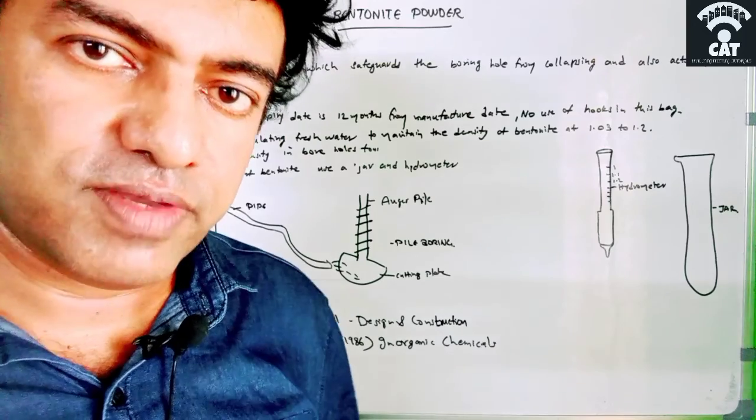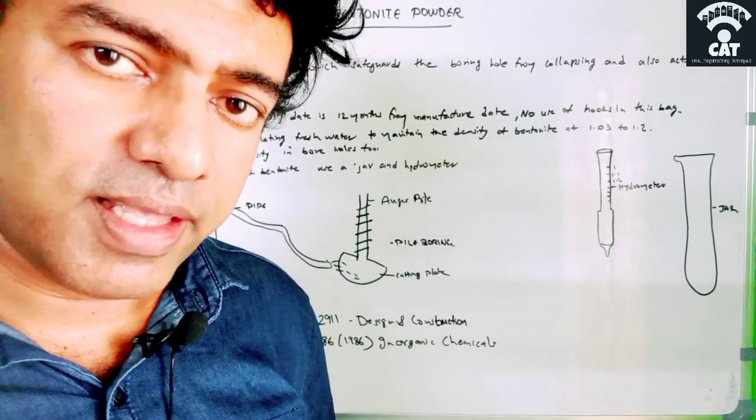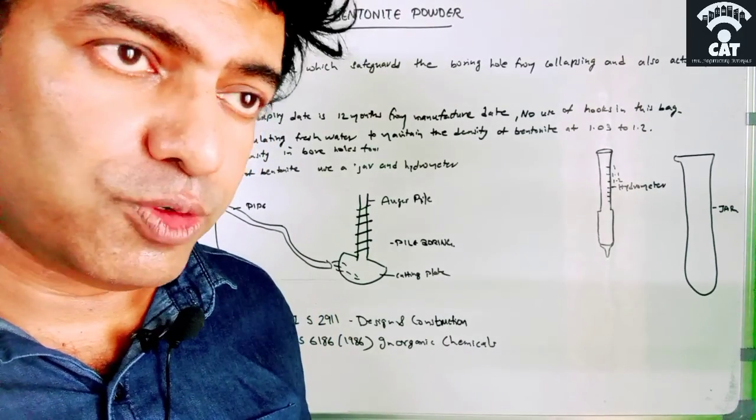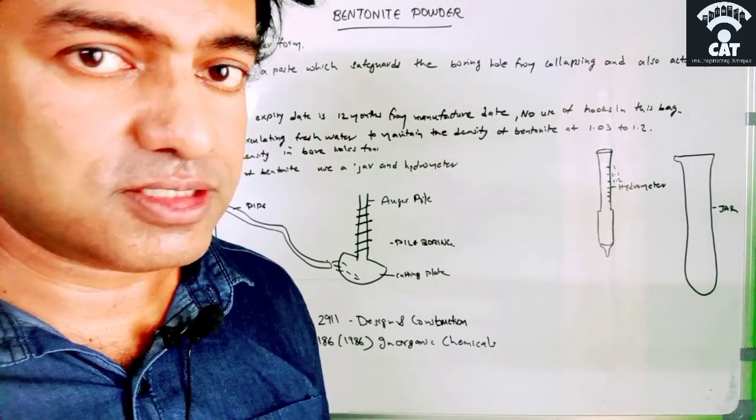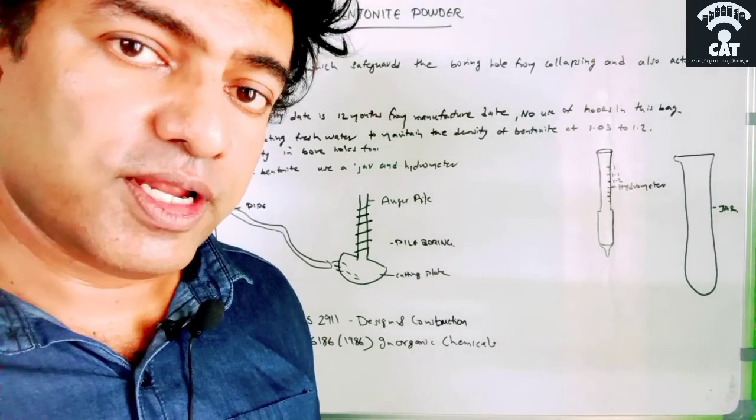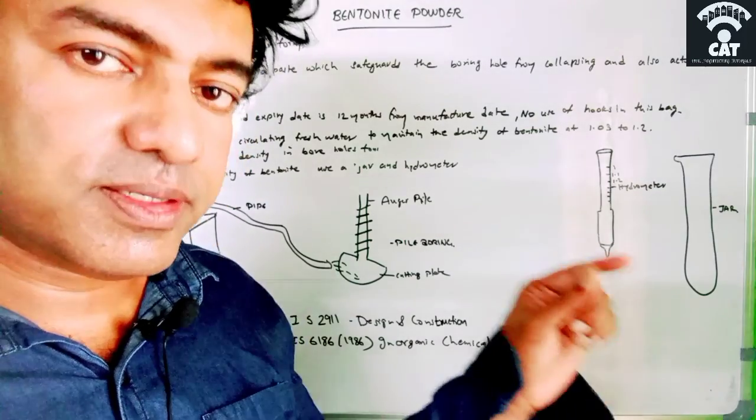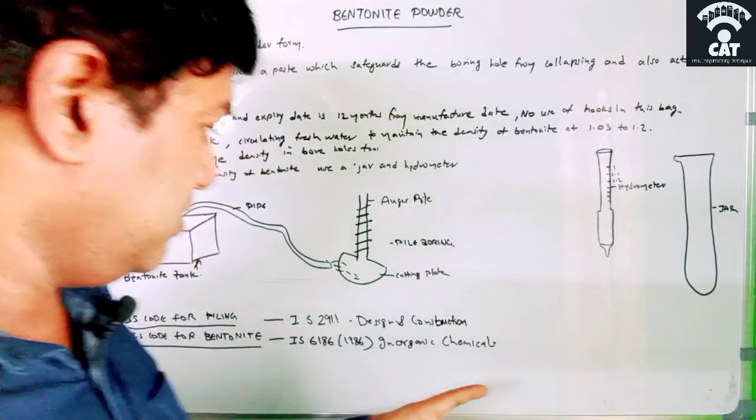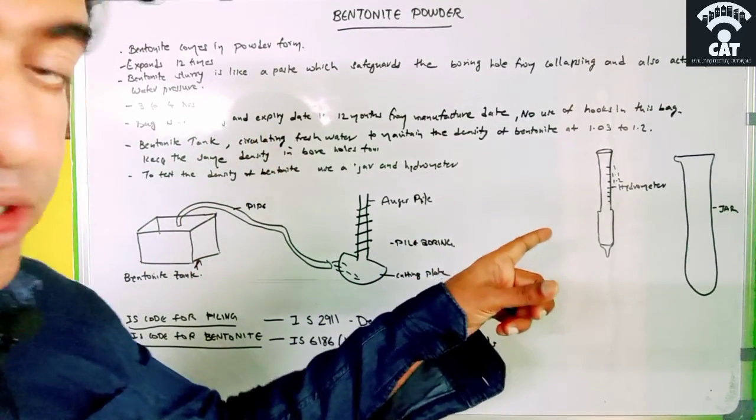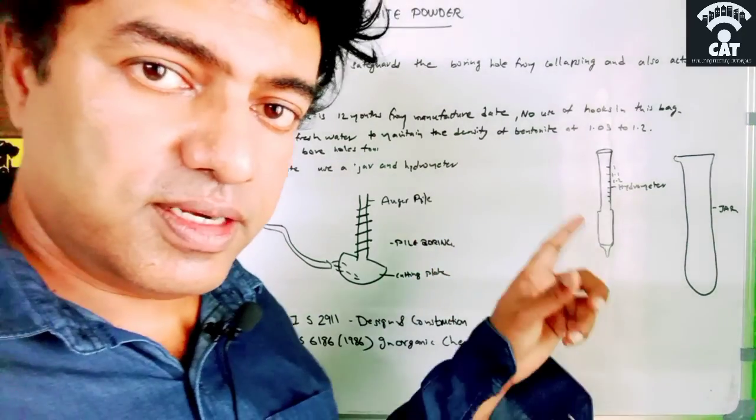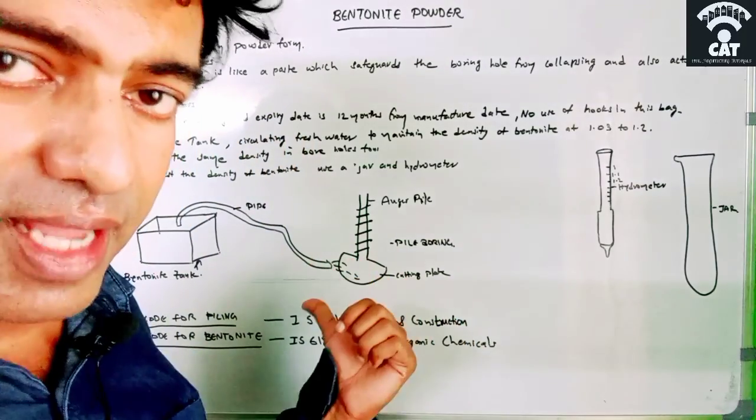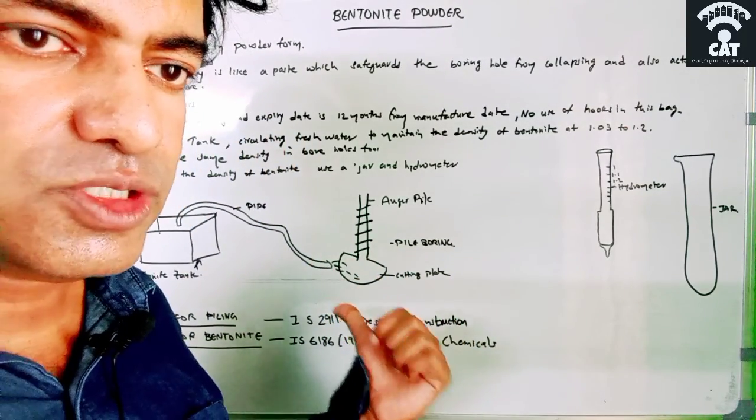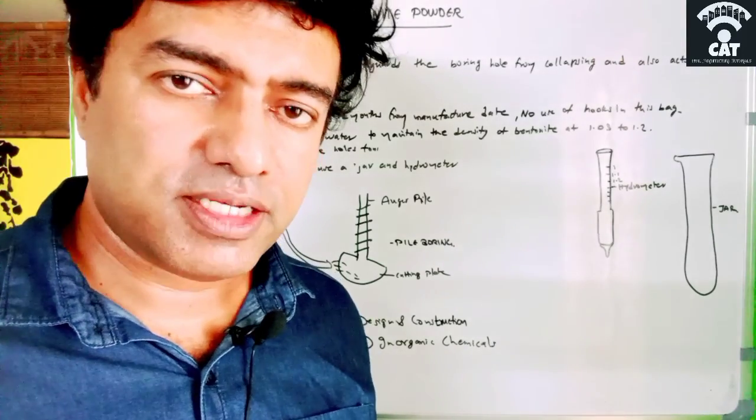If it is between 1.03 and 1.2, then we can use it for the piling. If it is below, we have to add more bentonite powder like I said before. If it is above 1.2, we need to add more water to keep it between the 1.03 and 1.2 density level. That's the way we have to determine the density in the bentonite tank. This is the main purpose of bentonite.